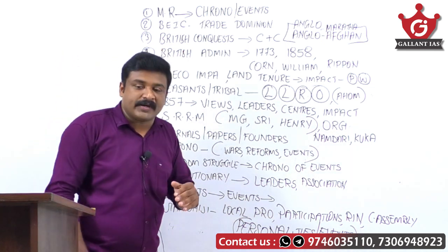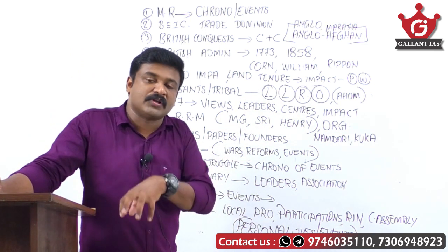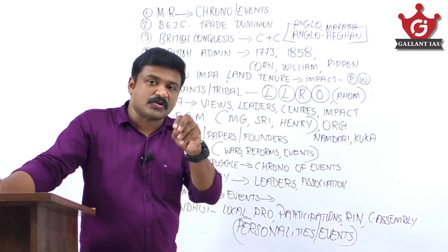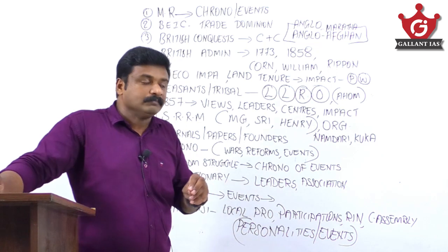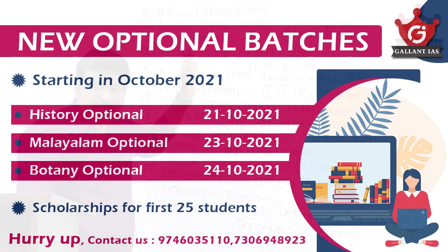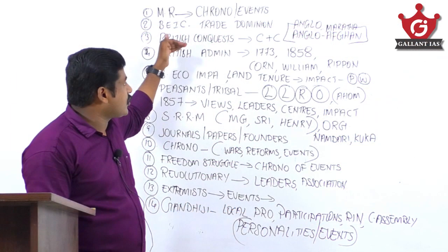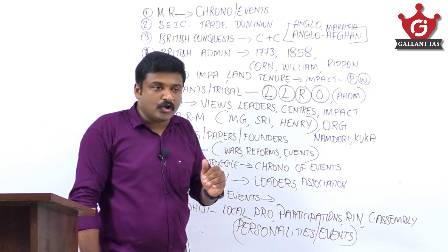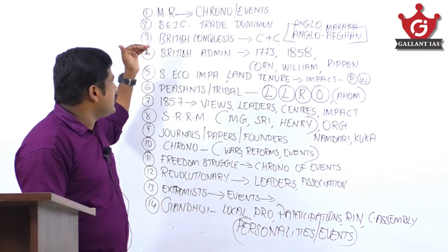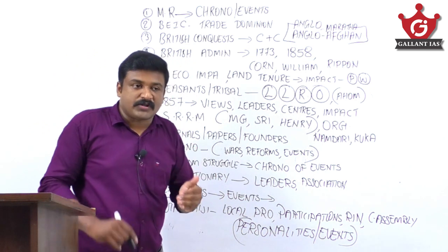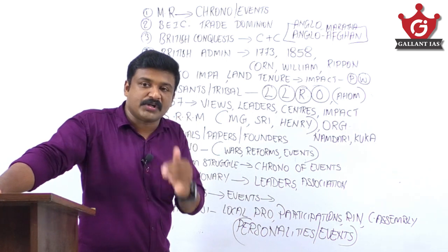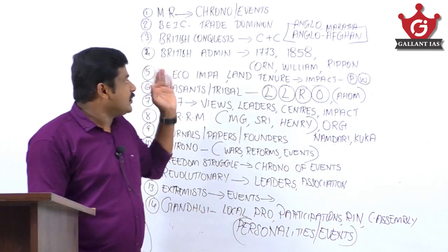For the British East India Company, cover all events related to how the British established their trade dominion and monopoly. British wars are important — their causes, consequences, and chronology — especially the Anglo-Maratha and Anglo-Afghan wars.